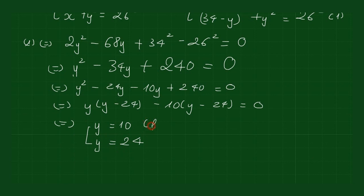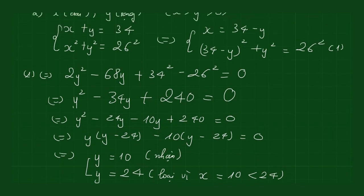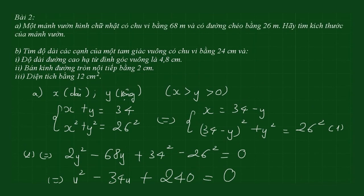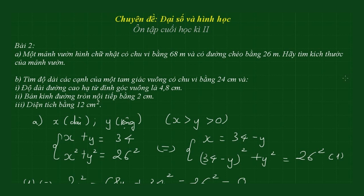Vì x > y, nếu y = 24 thì x = 10 < 24, loại. Nhận y = 10, suy ra x = 24. Kết luận: kích thước mảnh vườn là chiều dài 24m và chiều rộng 10m.